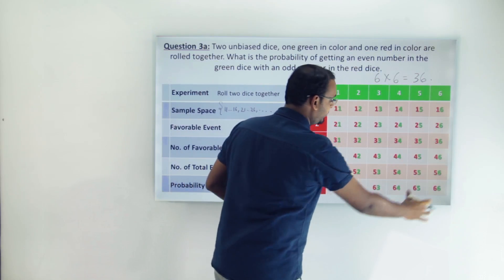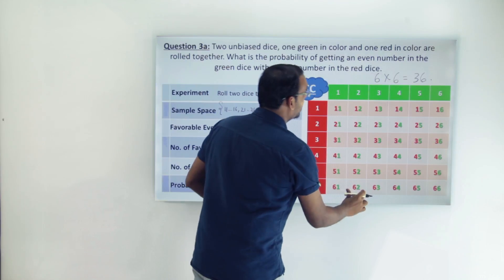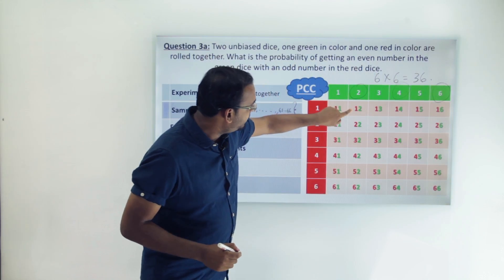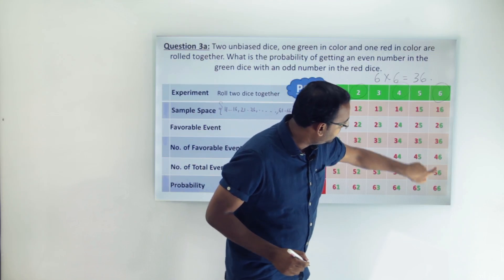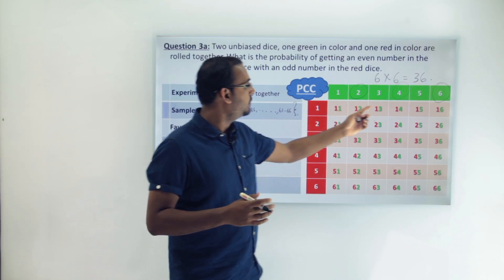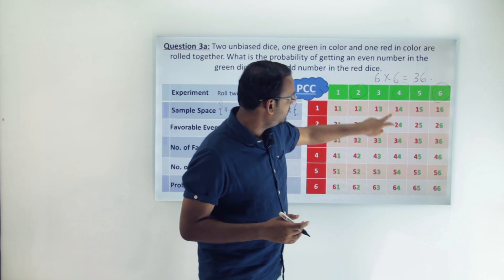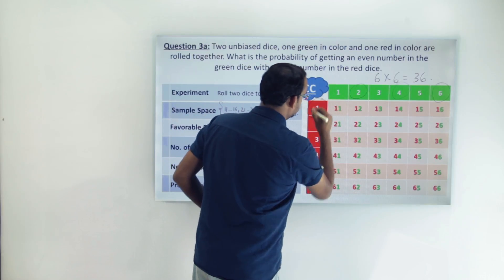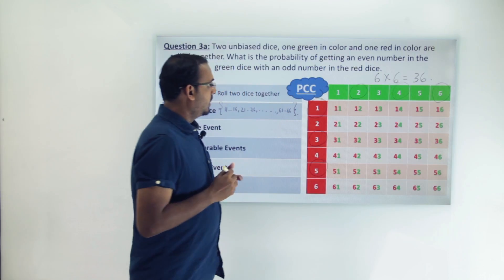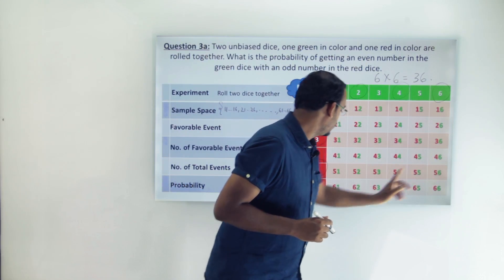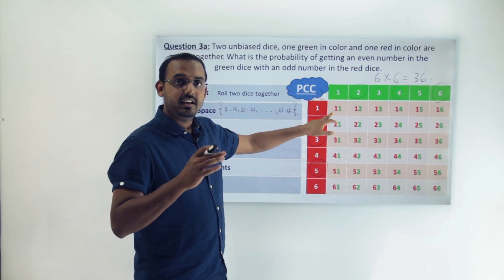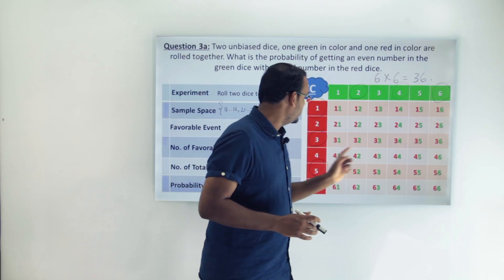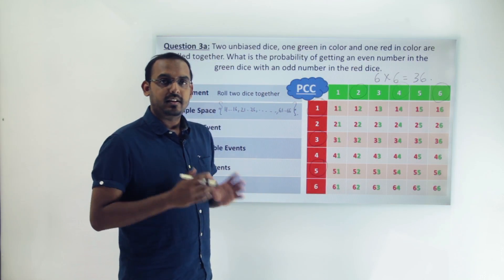Looking at the sample space table, all values in the columns for 2, 4, and 6 have an even value on the green die — because the even numbers in 1 to 6 are 2, 4, and 6. Now looking at the rows for 1, 3, and 5: all values in those rows have an odd number on the red die, because 1, 3, and 5 are odd numbers.